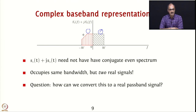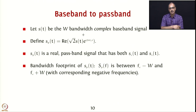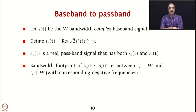However, we need to be able to transmit this signal as a real signal, because whenever you have any transmission medium, you must send a real signal. The question arises as to how we can make this into a real passband signal that can be transmitted over any medium. To do this, we have the baseband-to-passband transformation. We now deal with s(t) directly, a complex signal occupying the frequency range between minus W and W — a bandwidth of W but consisting of two real signals.